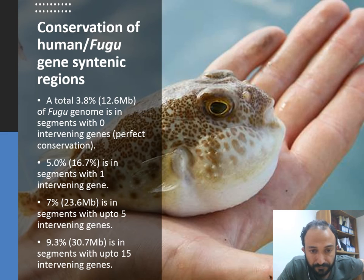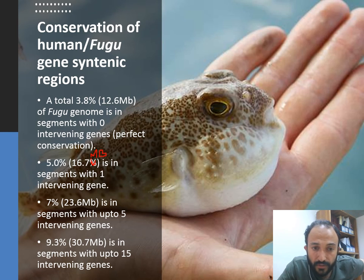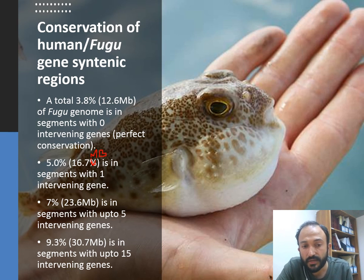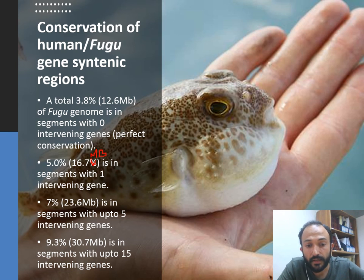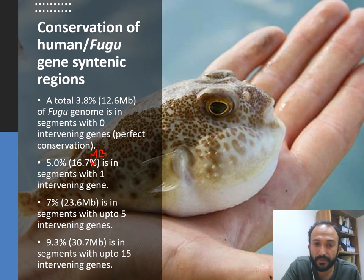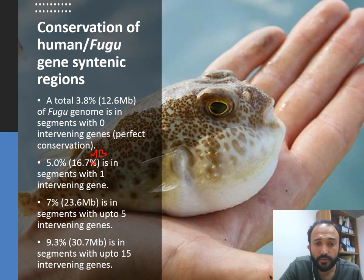Five percent — 16.7 Mb — is in segments with one intervening gene; 7% — 23.6 Mb — is in segments with up to five intervening genes, meaning those intervening genes are not present in either the human or Fugu genome in a comparable syntenic manner; and 9.3% — 30 Mb — is in segments with up to 15 intervening genes. Collectively, approximately 30% of the human and fish genomes are identical or syntenic between human and fish.